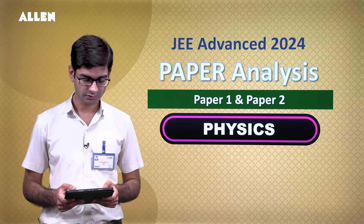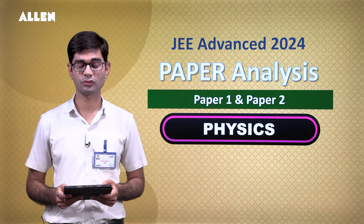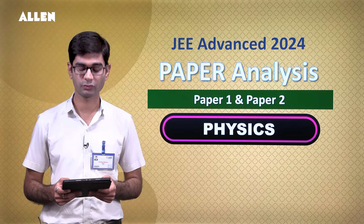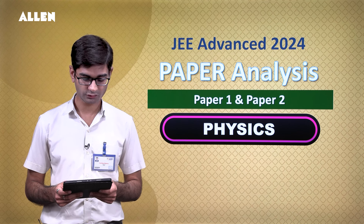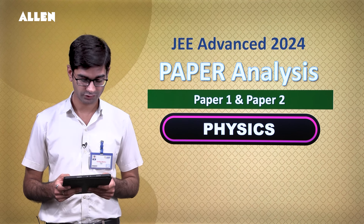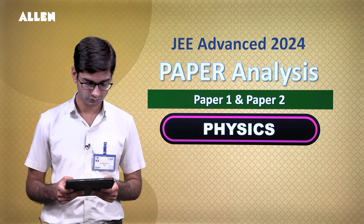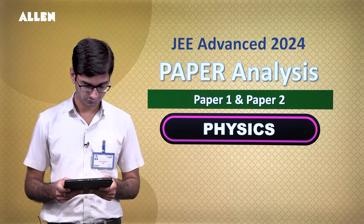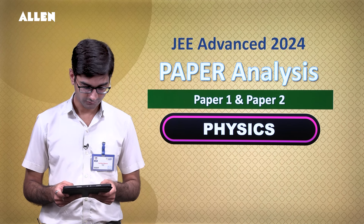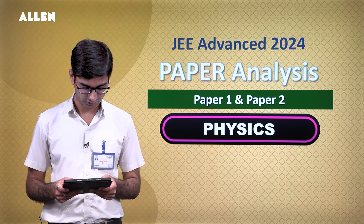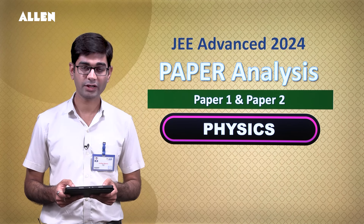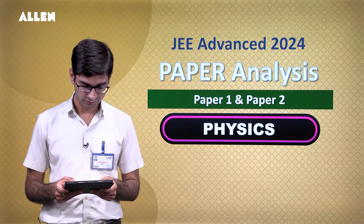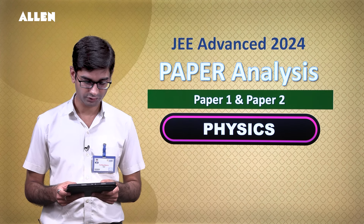Weightage-wise, if we talk about high-weightage topics: magnetism had 3 questions, electrostatics had 4 questions overall, geometrical optics, wave optics, fluid mechanics had 3 questions, and EMI-AC had 2 questions.